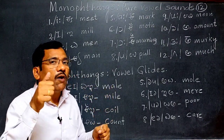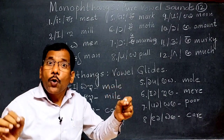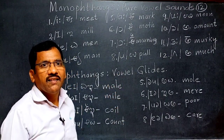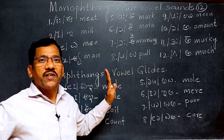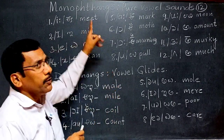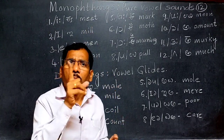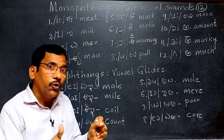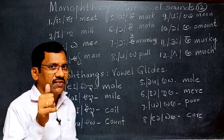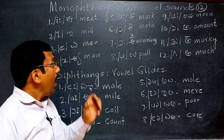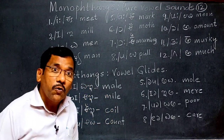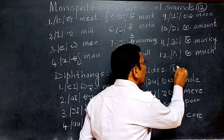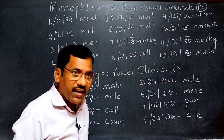Next, diphthongs. Diphthongs are vowel glides — they are made up of two vowel sounds. Two pure vowels will make one diphthong. In simple words, single vowel sounds are called monophthongs and double vowel sounds are called diphthongs. They are eight in number in English.